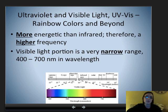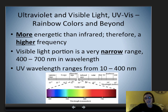The visible light portion is a very narrow range, only about 400 to 700 nanometers in wavelength. That's the only light that we can see. Our eyes actually cannot detect the ultraviolet wavelength, which ranges from 10 to 400 nanometers.